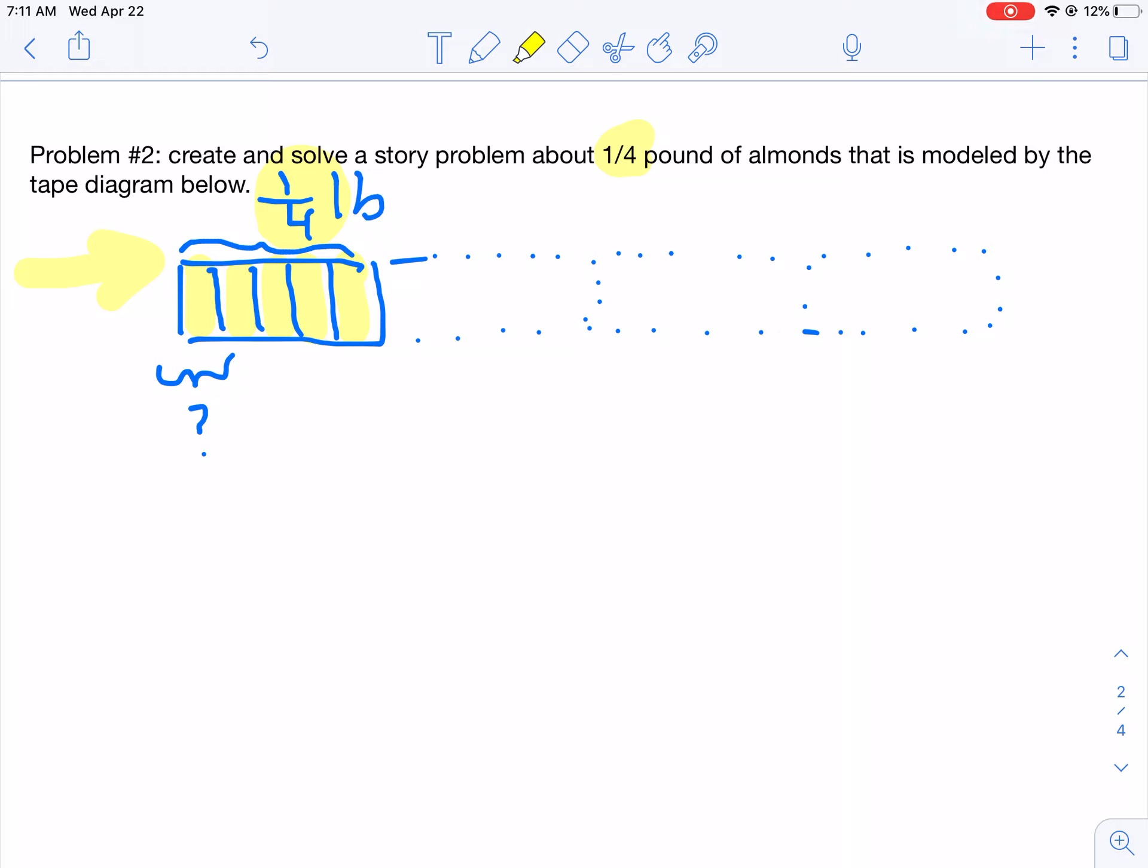Okay. So what is your expression going to be? We have to find out how much of a whole pound of almonds is in each of the units.